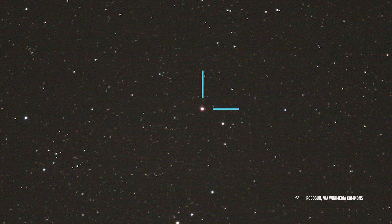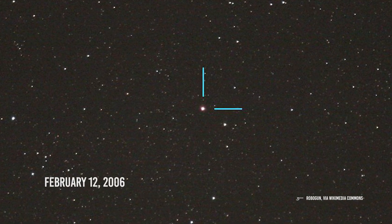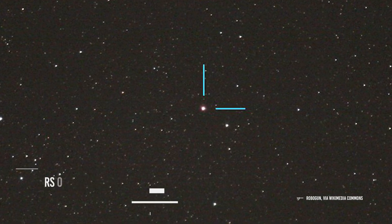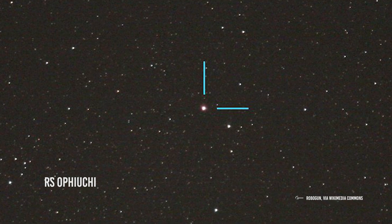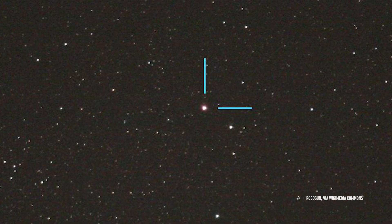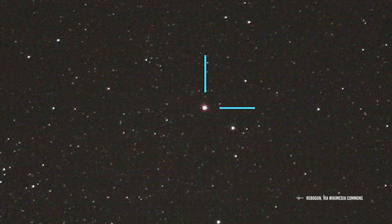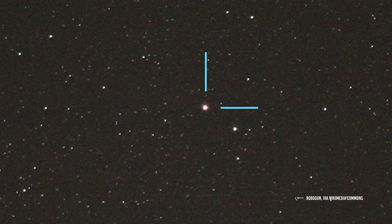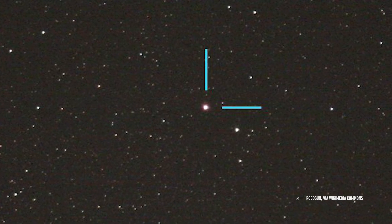After 15 years from the last explosion recorded on February 12, 2006, RS Ophiuchi, a so-called recurring nova that is a star that increases its brightness at more or less regular intervals, came back to shine with overbearing power.